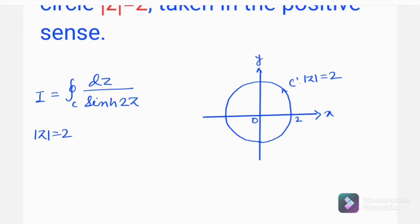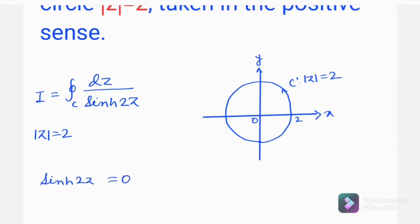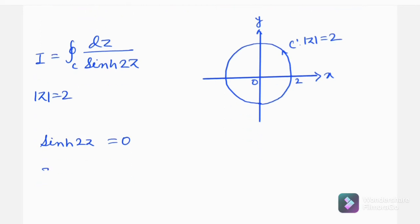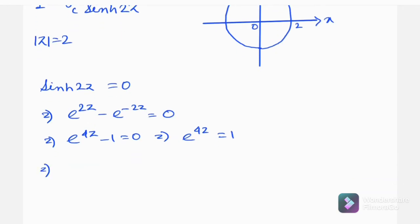To apply the residue theorem, we first find the singularities by setting sinh(2z) = 0. This means e^(2z) − e^(−2z) = 0, or equivalently e^(4z) − 1 = 0, so e^(4z) = 1, which means e^(4z) = e^(2nπi).